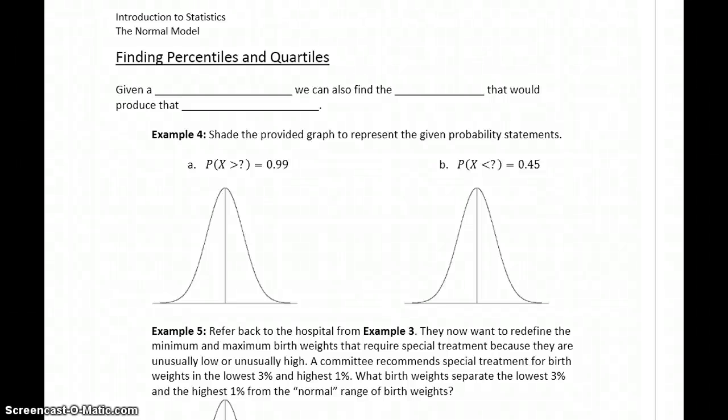So far we've looked at examples where we've calculated probabilities. But now what we can do is actually work those problems backwards. So given some probability, or some percentage, we can also find the number that would produce that probability.